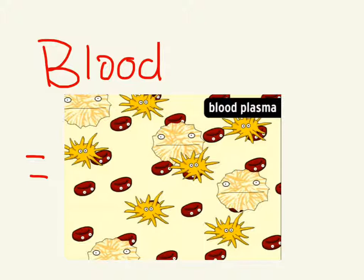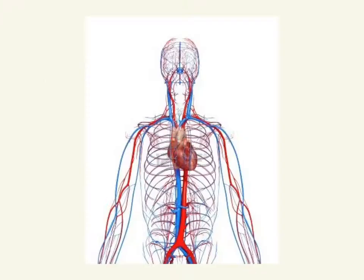These are called platelets, they help your blood harden or clot when you have a bruise. And you can't see it, but in the background is blood plasma. It is a liquid substance that blood is mostly made of, and it's mostly made of water. Blood plasma carries hormones and proteins.